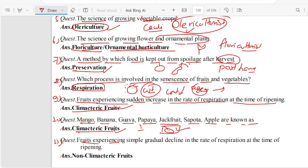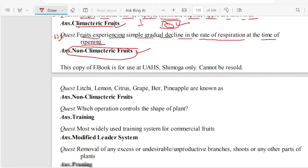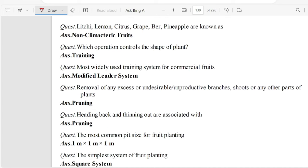Fruits experiencing simple gradual decline in the rate of respiration at the time of ripening are Non-Climacteric Fruits. Litchi, lemon, citrus, grape, pear, pineapple are known as Non-Climacteric Fruits.